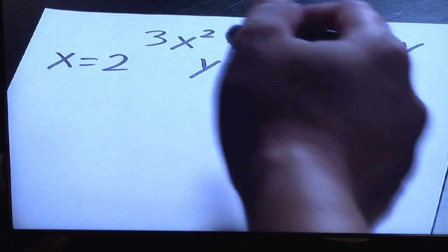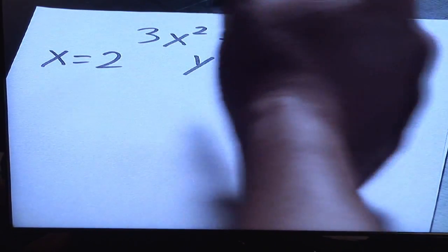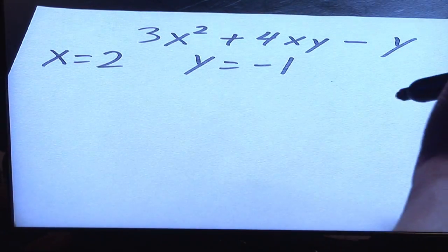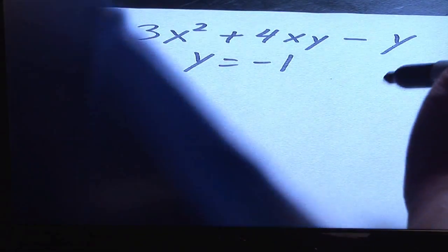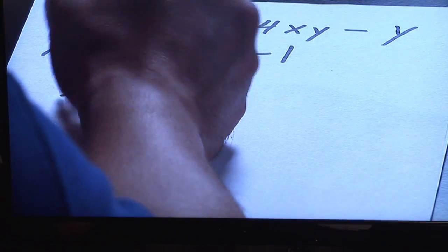So the idea here is, for every x, you put 2 in, and then for every y, you put negative 1 in. So here's how it should be written.